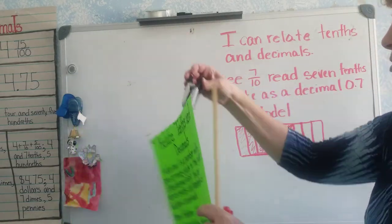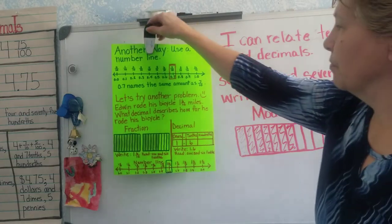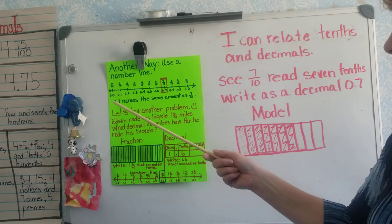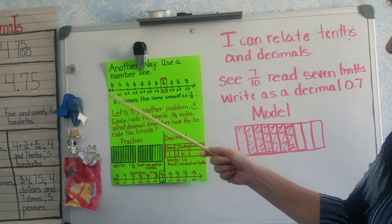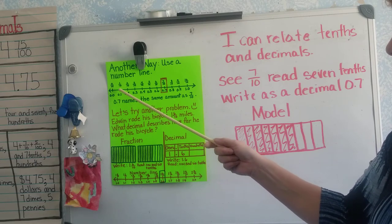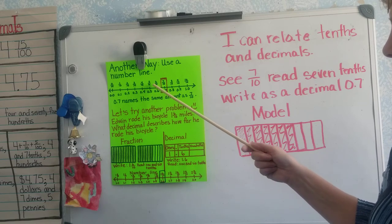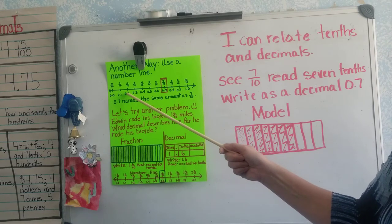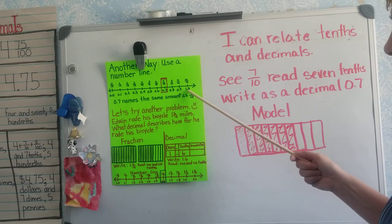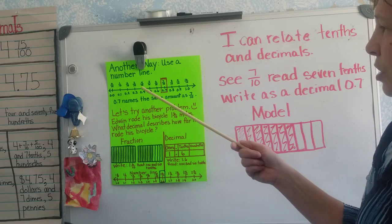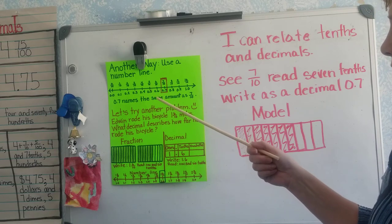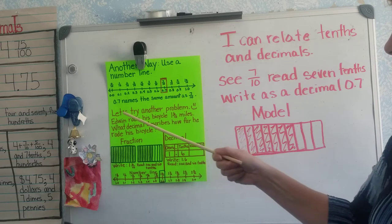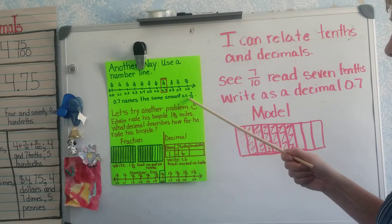There's another way we can show seven tenths, and that is by using a number line. Mrs. Allen has a number line here. We start at zero tenths, 0.0, and go through one tenths, two tenths, three tenths, four tenths, five tenths, six tenths, seven tenths, eight tenths, nine tenths, and ten tenths. The bottom shows those fractions as decimals. Javon had read seven tenths of the book, so on the number line we go to 0.7, and we read that as seven tenths. So 0.7 means the same amount as seven tenths.